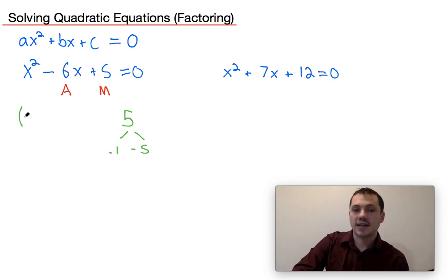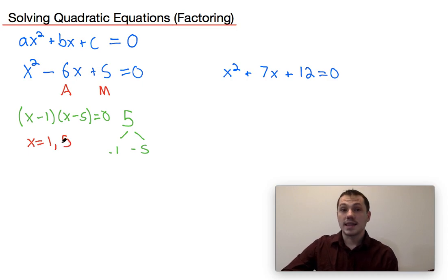So when this factors, it factors as x minus one times x minus five is equal to zero. Once we have that, we can further solve the equation to determine that x is either equal to one or x is equal to five. And that's it. That's how we would solve that problem.